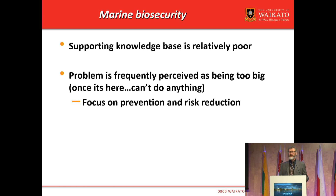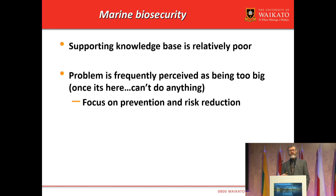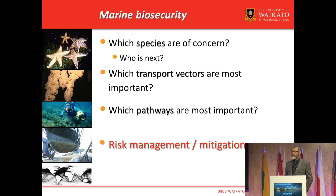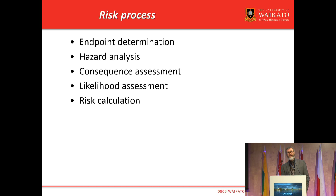The supporting knowledge base is poor, and I'd like to point out that there is a defeatist attitude that exists. The problem is frequently perceived to be too big, and as a consequence we're stuck — we don't know what to do, so we don't do anything. The focus on prevention and risk reduction is also related to our ability to do something. It becomes tractable; we can be seen to be having action and effect. Many questions at this point in time are around species of concern, the vectors that are important in the pathways, and as a consequence of that poor data knowledge, we focus on risk management and risk mitigation.